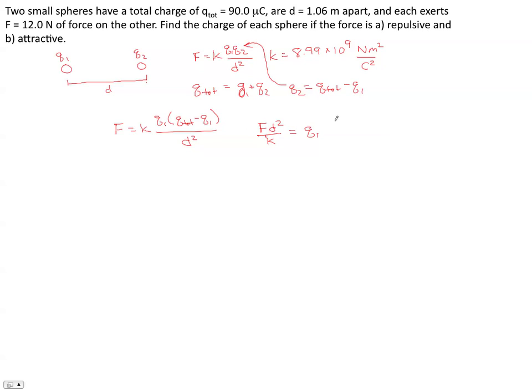At the same time, let's distribute the q1 through this term. On the right hand side, we end up with q1 times q total minus q1 times q1, which is q1 squared. Next thing I'll do is move everything to the left hand side.